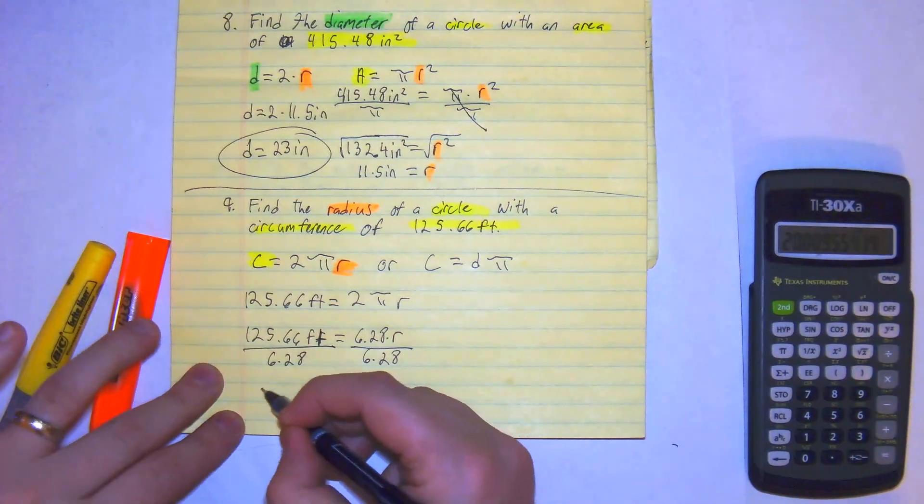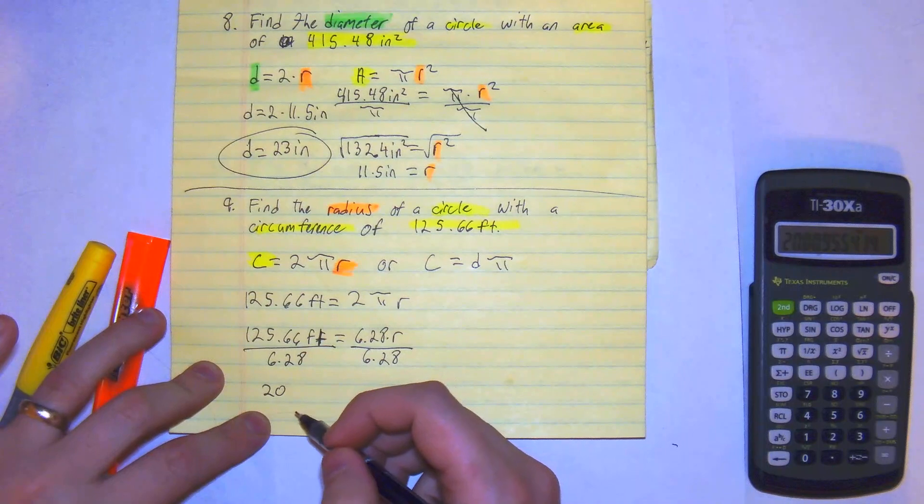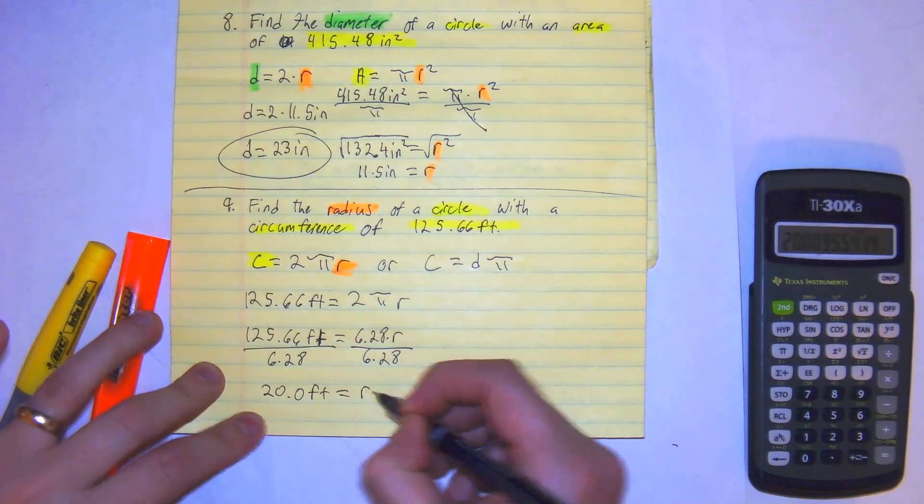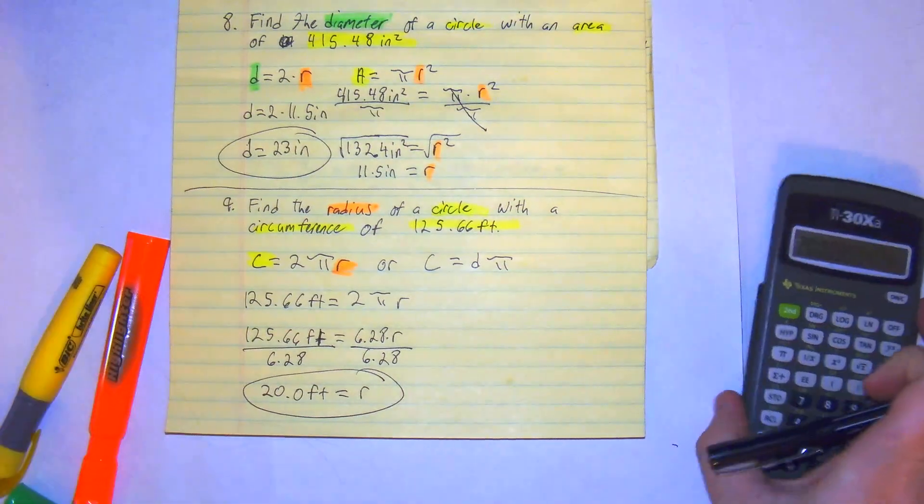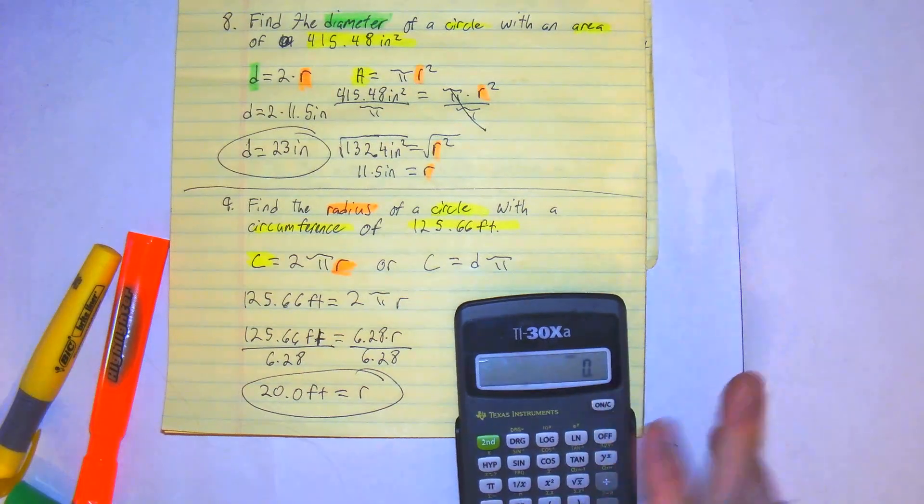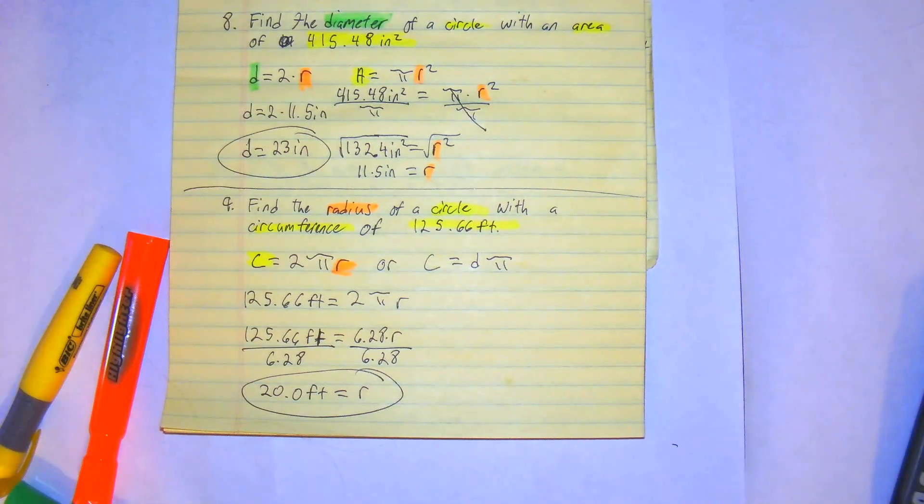You would get right here that we have roughly 20.0 feet equals the radius. So you can really get exact if you want, but based off our rounding, it's going to be about 20.0 feet for our radius. And that's how you would do number 9.